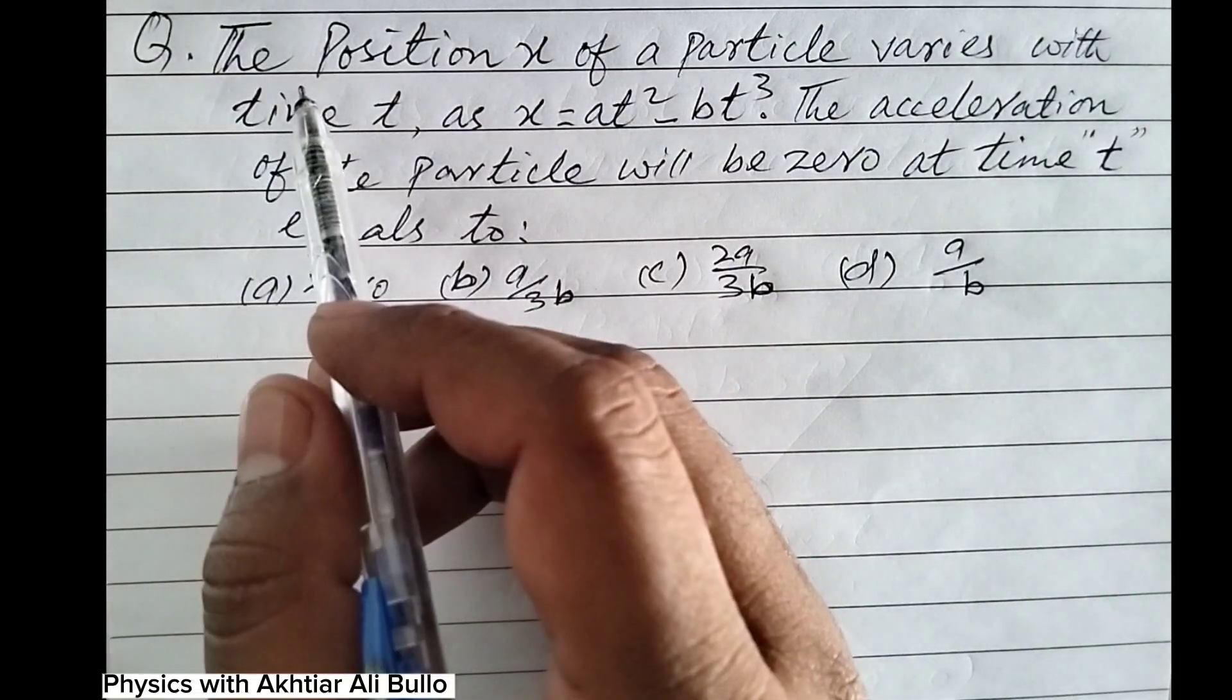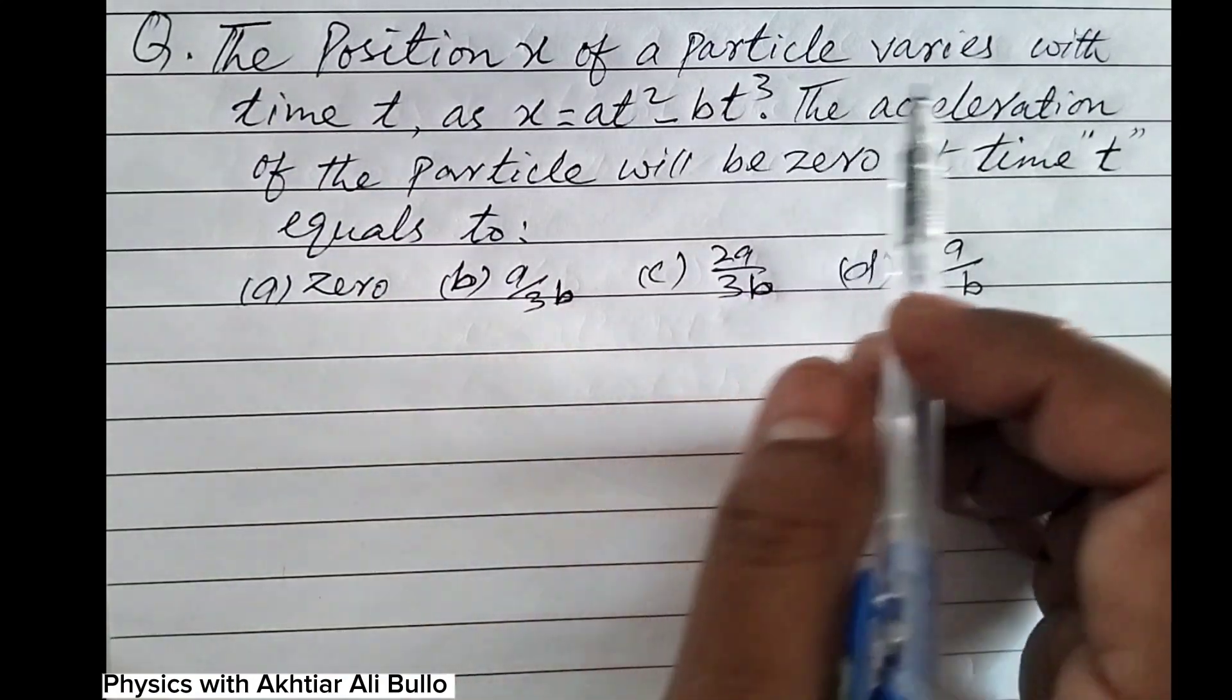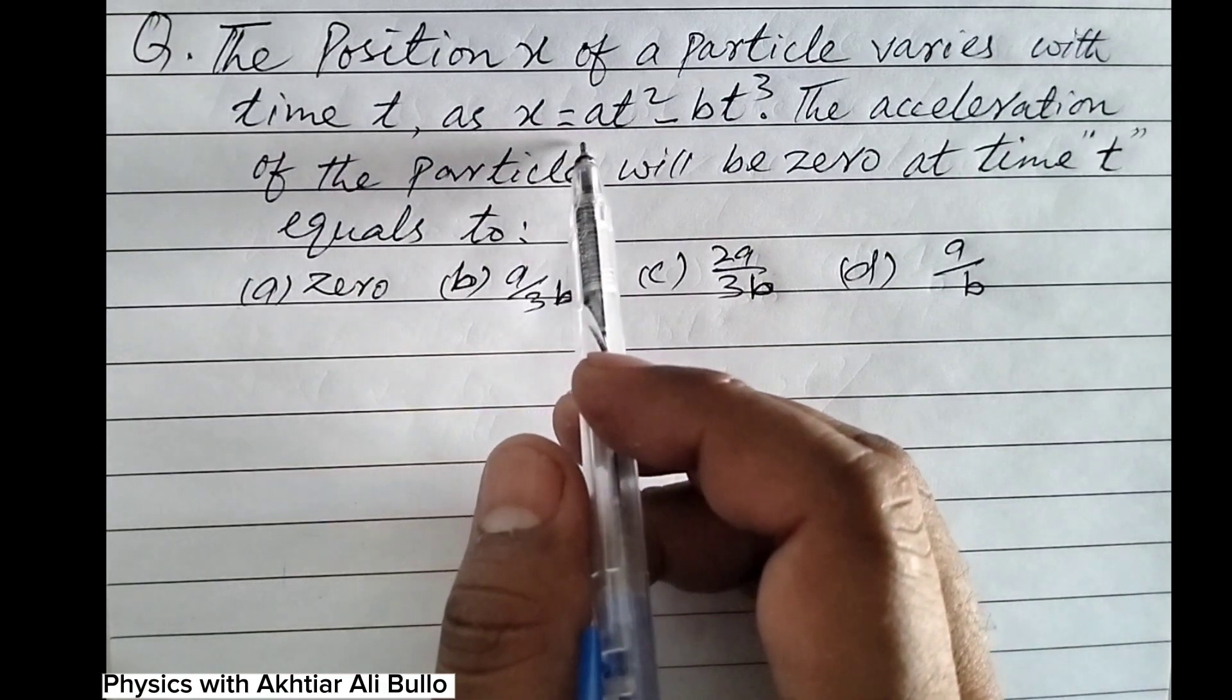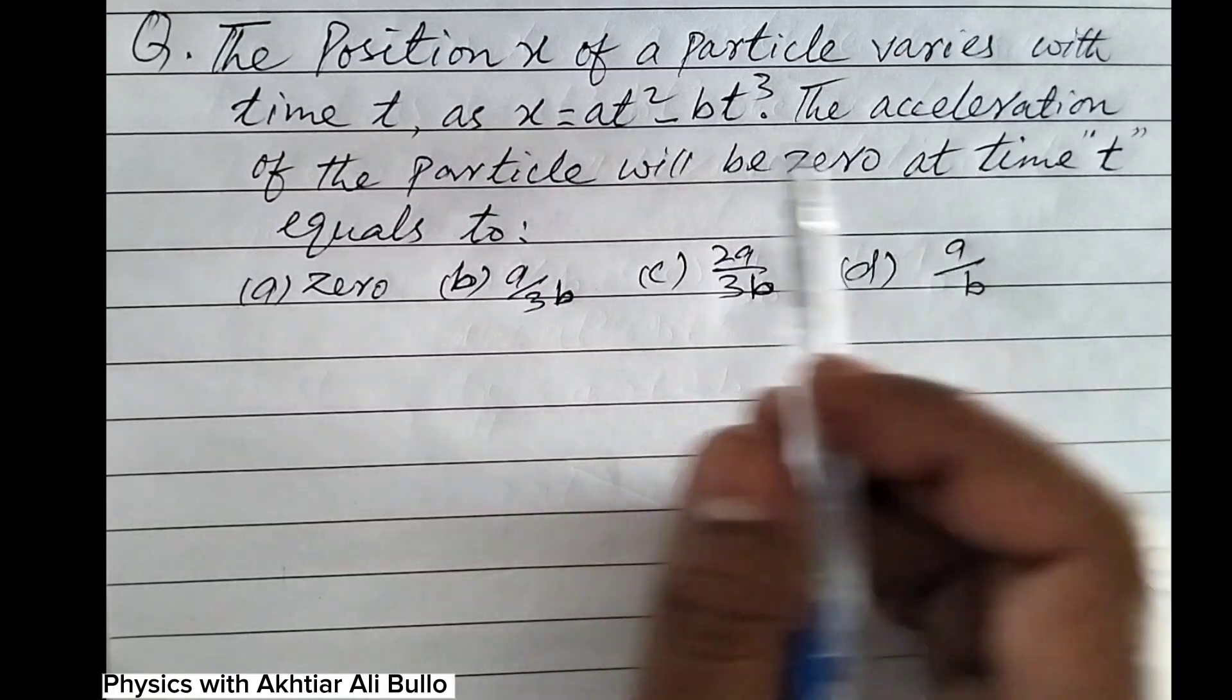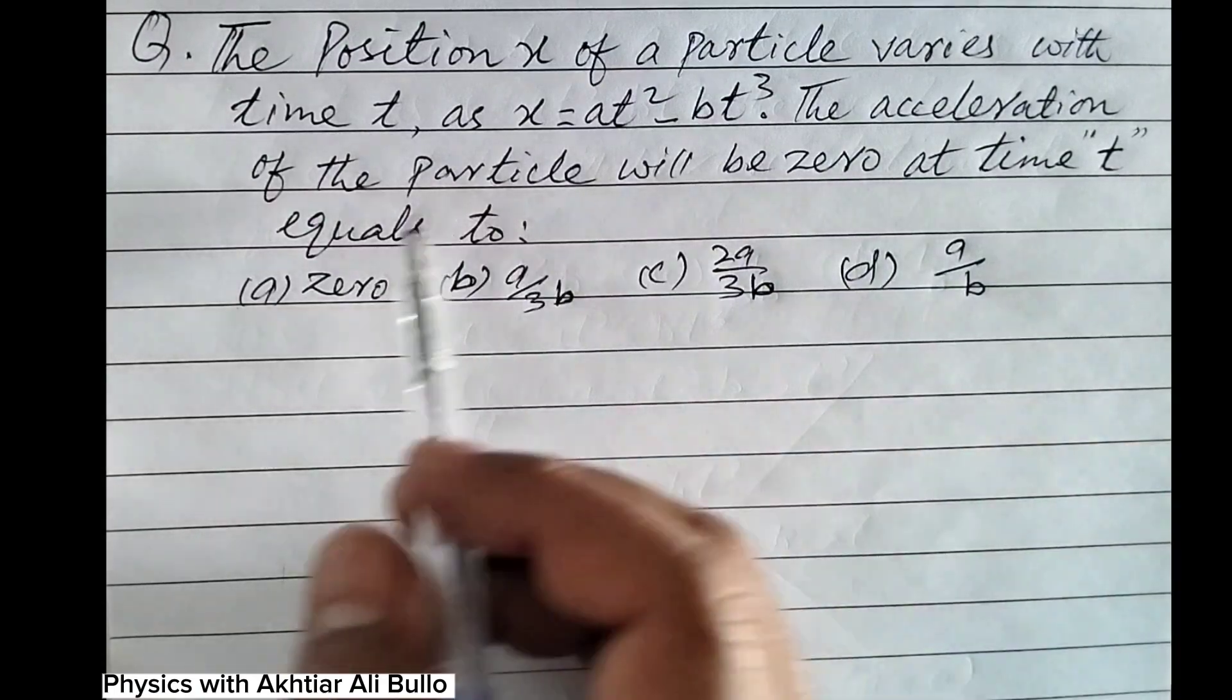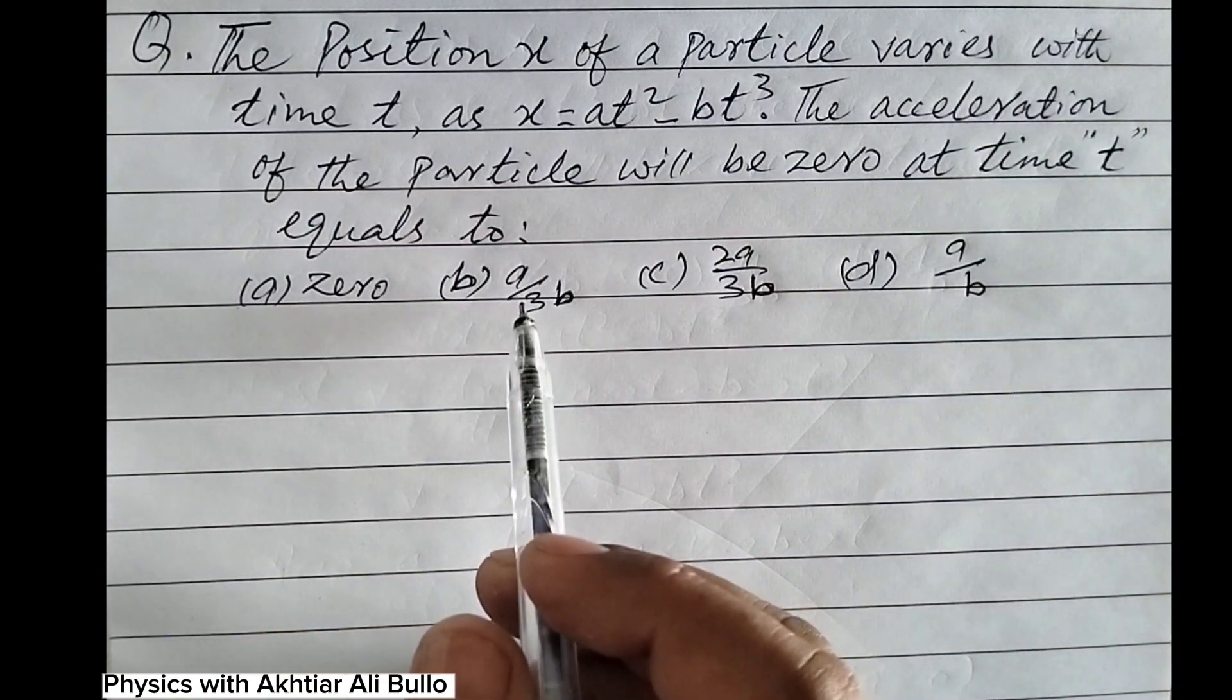The question is: the position x of a particle varies with time t as x = at² - bt³. The acceleration of the particle will be zero at time t equals to: (a) zero, (b) a/3b, (c) 2a/3b, (d) a/b.